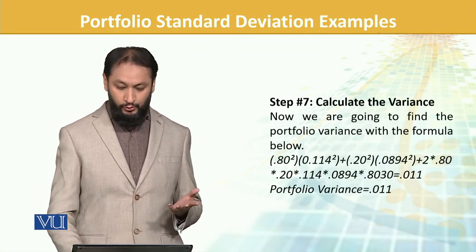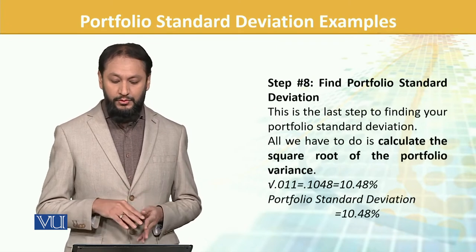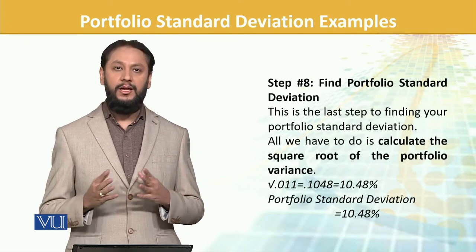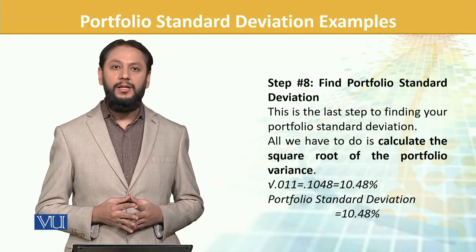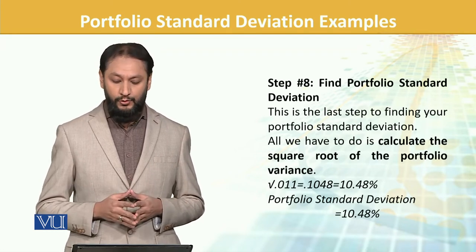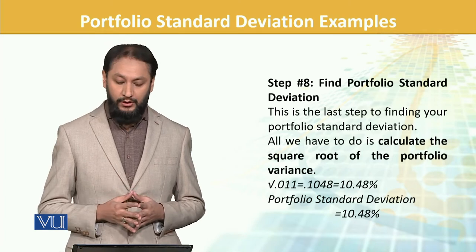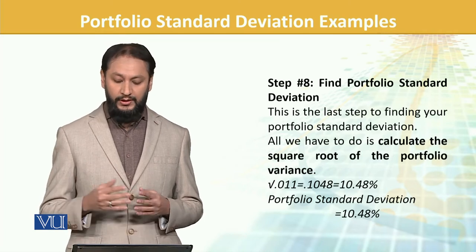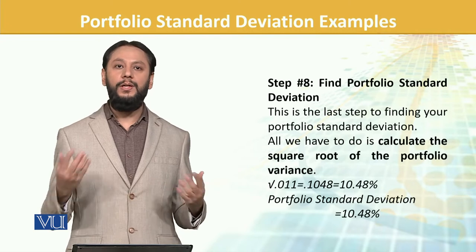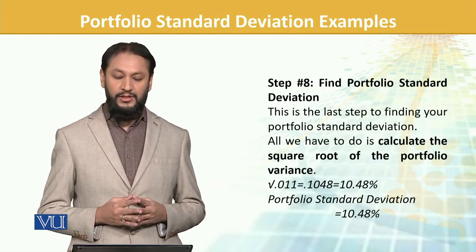The next step is to convert variance into standard deviation — that is a very simple task. You take the square root of the variance. The square root of 0.001 gives us 0.1048, which converted is 10.48%.